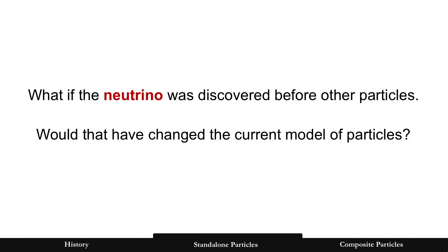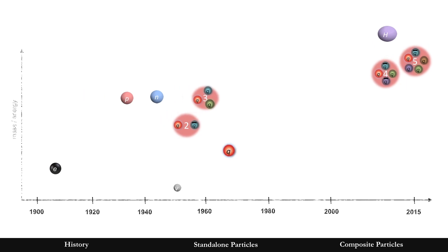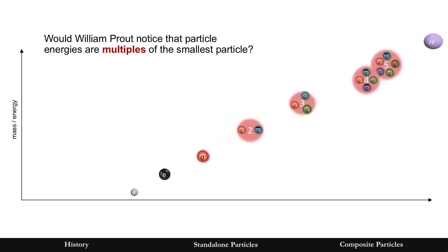Let's cover standalone particles first, beginning with a question: what if the neutrino had been discovered before other particles? Would that have changed the current model of particles? To answer that, let's rearrange the chart, assuming the neutrino came first, then ordering particles by increasing energy as they were discovered. The question is: would William Prout have noticed that particle energies are multiples of the smallest particle? It's not exactly a fair question — you can't add the masses of particles as you can for atoms.